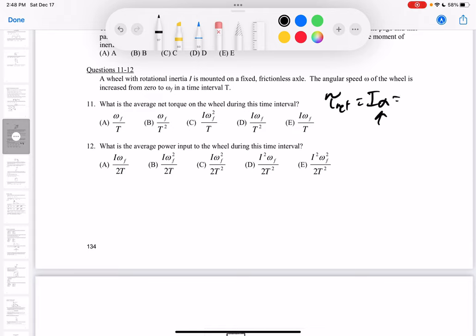Alpha is equal to the change in omega over T. So my change in omega is going from 0 to omega F. That would be I times omega F minus 0 over T. That's my change in time on the bottom, so that's just capital T.